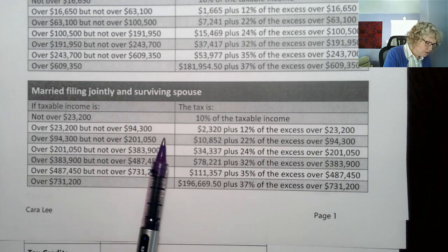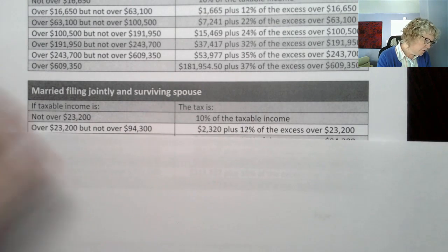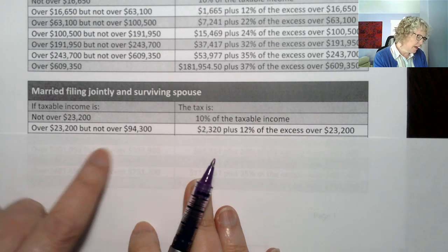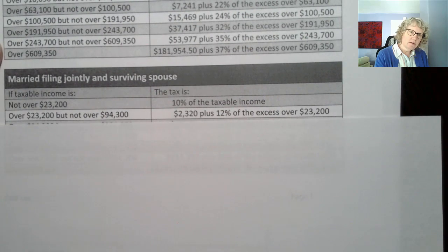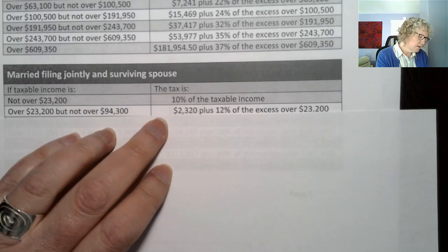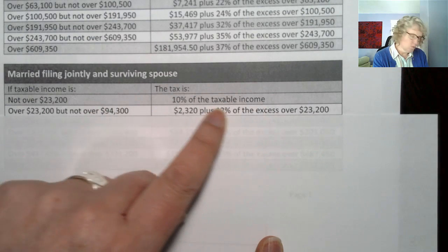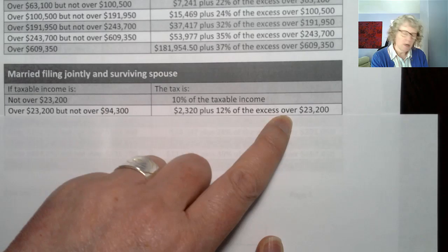We're going to use that row. It helps to use a sheet of paper to isolate the row you're looking at. Our $74,800 is in this row — the white one, not the shaded one. On the right side of the table it says the tax is $2,320 plus 12% of the excess over $23,200. This is actually a formula written out in words.